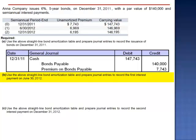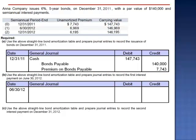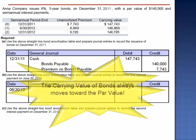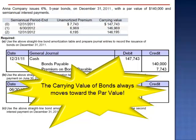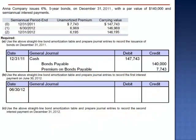Letter B asks us to use the amortization table and prepare journal entries to record the first interest payment on June 30, 2012. When a bond sells at a premium, the carrying value will decrease over time, as the carrying value always moves toward the par value. The decrease in the carrying value is recorded at the time of the cash payments.